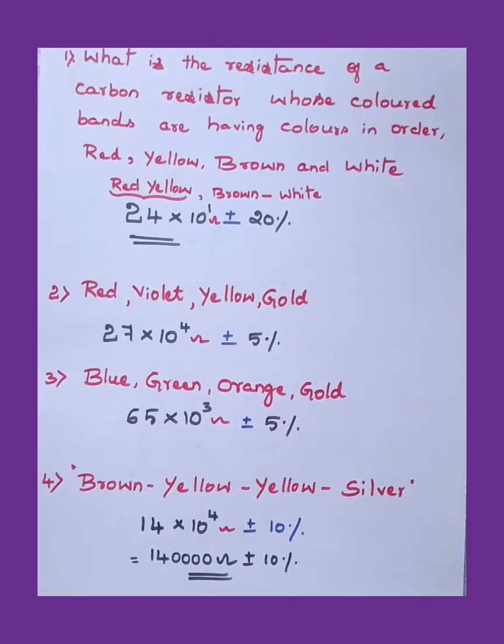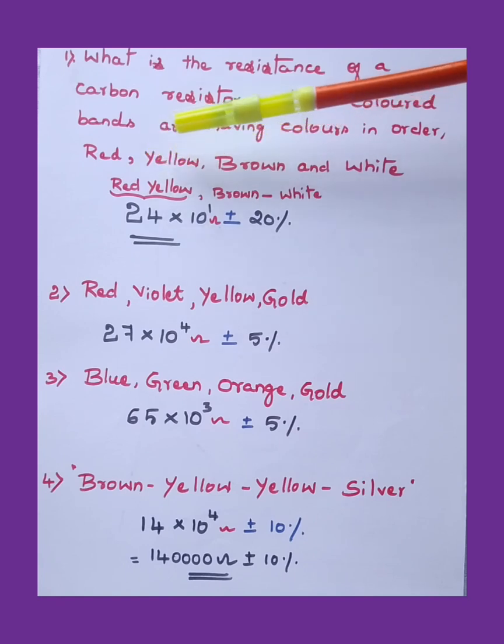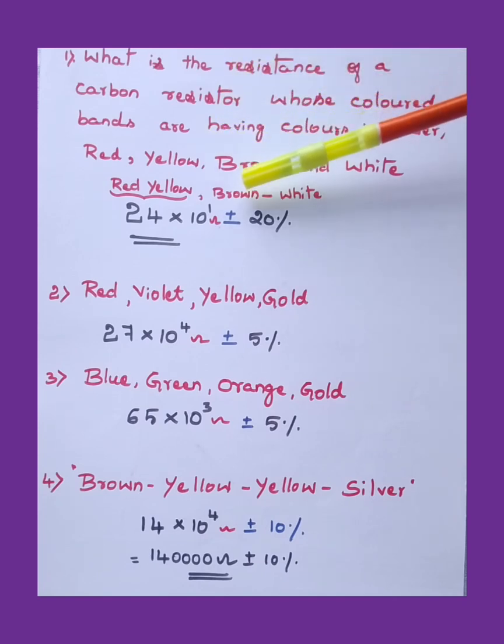We shall now move to the numericals. What is the resistance of a carbon resistor whose colored bands are having colors in order: red, yellow, brown, and white? For the first two we have to check out the single digit values. For red, what is the value? It is 2. For yellow, the value is 4. For the third band, you have to write the value of multiples. For brown, what is the multiple value? It comes after black, right? So 10 to the power of 1. Then plus or minus tolerance value, for white it is 20 percentage. So this is the answer for it. Easily you can score marks, one mark easily in HSTR question paper. If you revise, there will be a lot of numericals from the physics part than the direct questions of the concepts. You need to work out the application level numericals more and more.